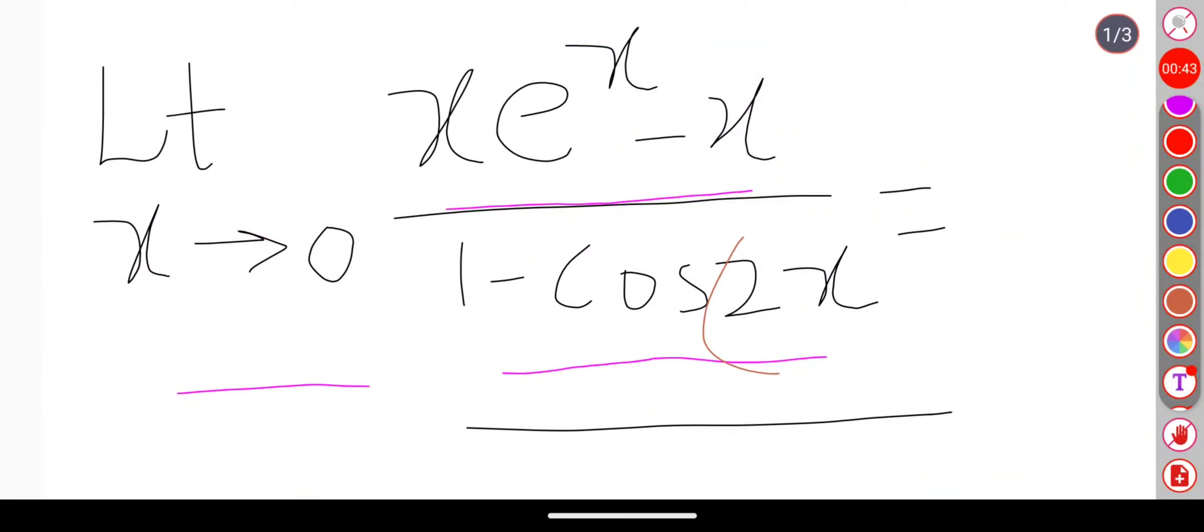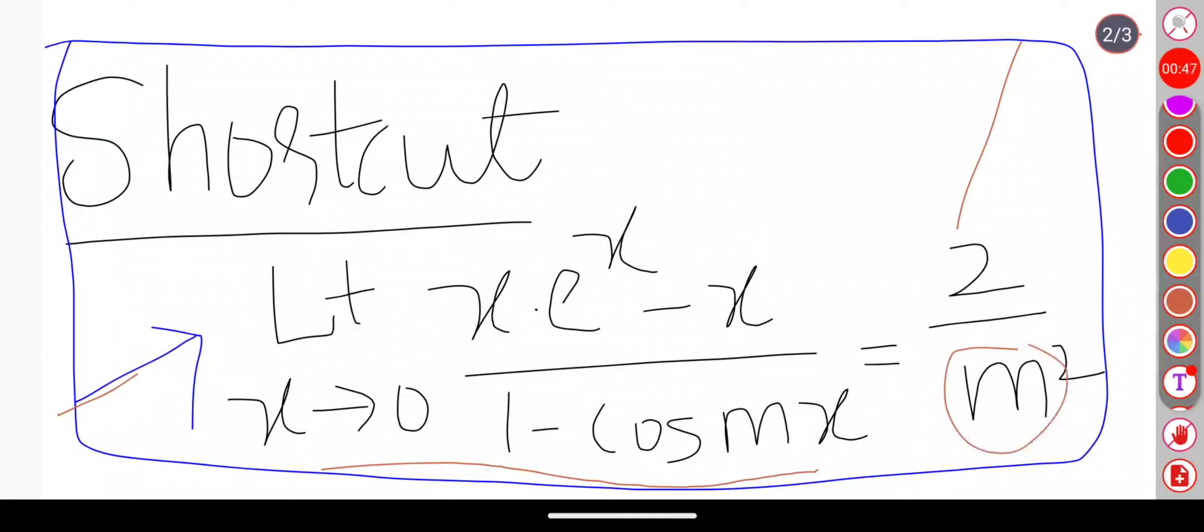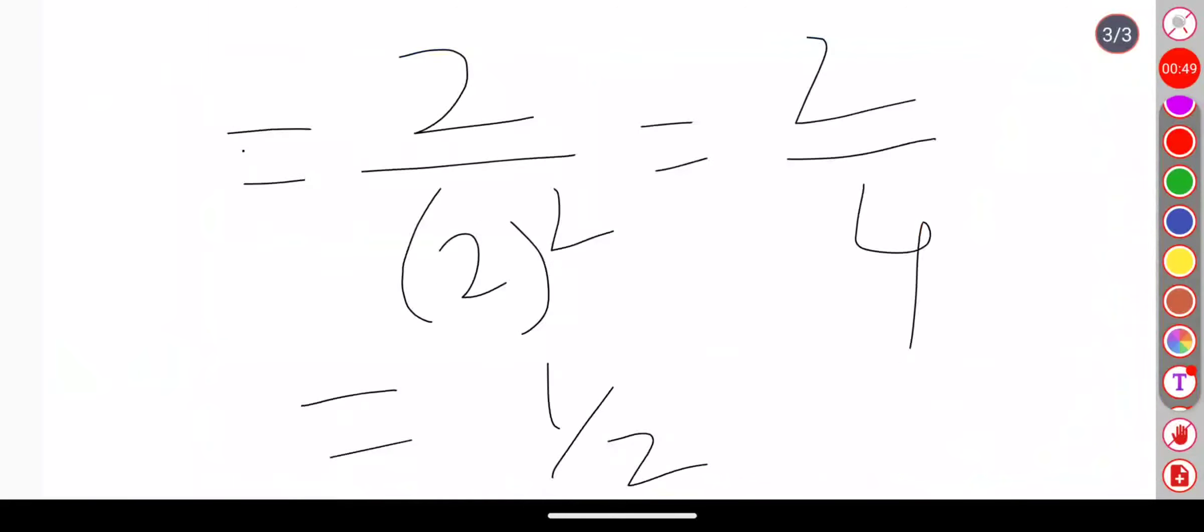So here if we see the question, my m value is 2. Here in place of m I will substitute 2. So I will be getting 2 by 2 squared which is 2 by 4.